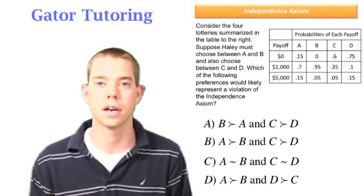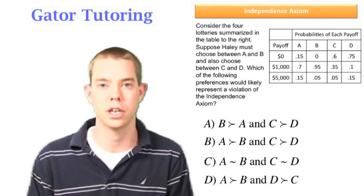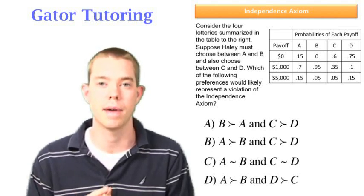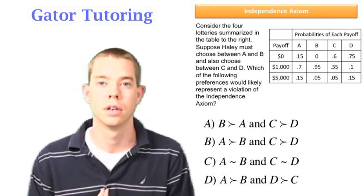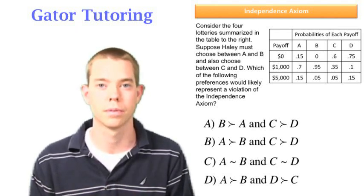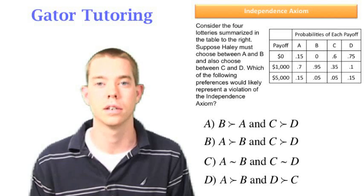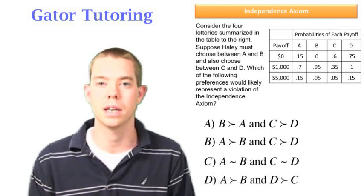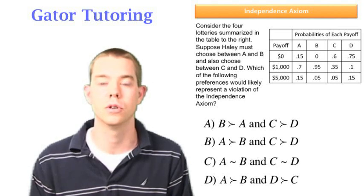The way we know that is because gambles A and D both have the highest percent chance of ending at both of the extreme outcomes, either zero or 5000. They also have the higher expected wealth, but they're more risky. So if somebody were to prefer B to A, they should also prefer C to D. And again, this represents somebody who's pretty risk averse.